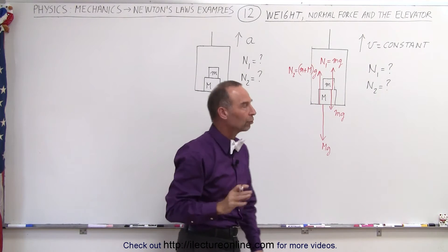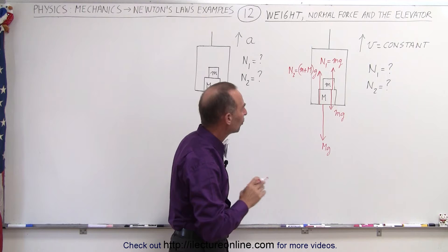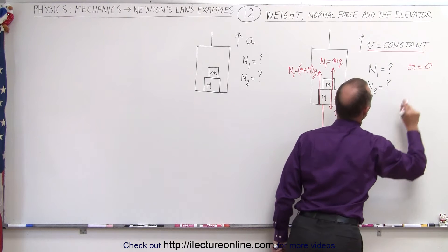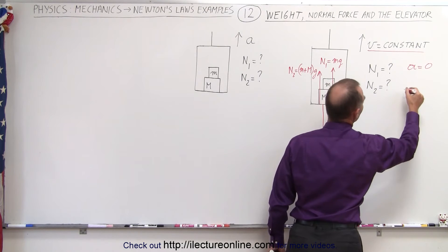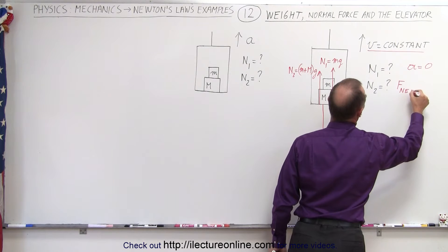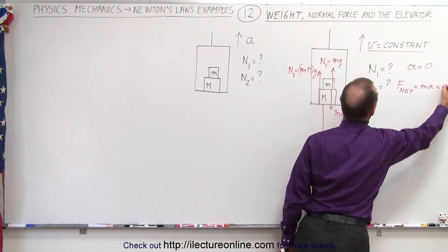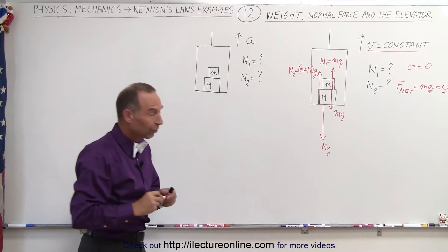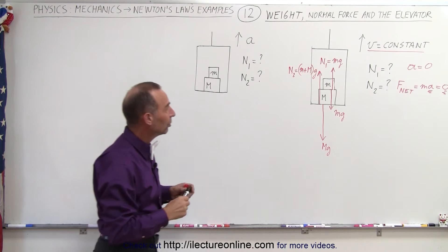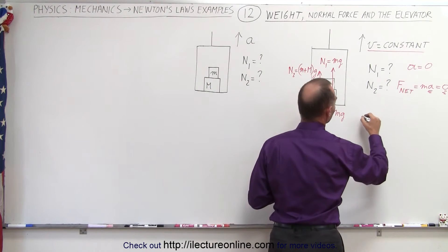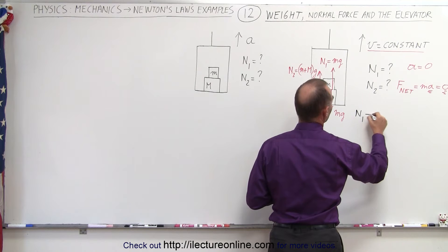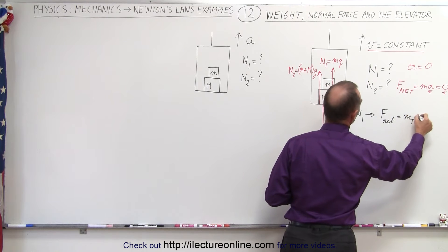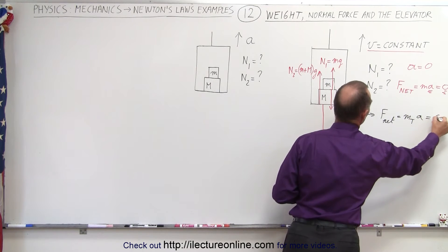Why can we say that? The reason is that velocity is constant, and when velocity is constant, a is equal to zero — there's no acceleration. When a equals zero, we can say that the net force, which equals mass times acceleration, must also be zero. So we look at each situation. To find n1, we assume that f_net equals mass times acceleration, which of course must equal zero.